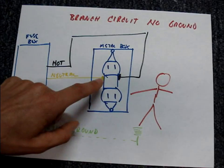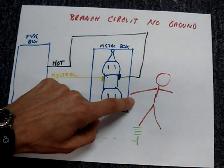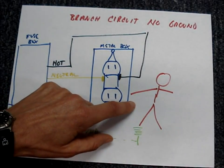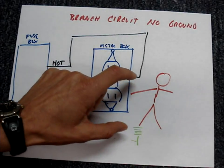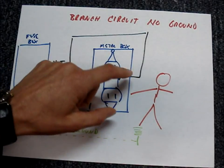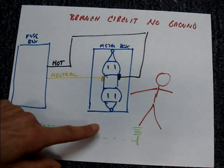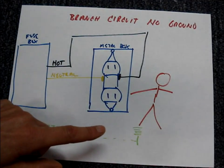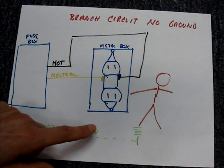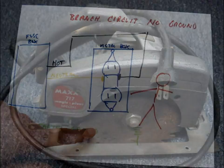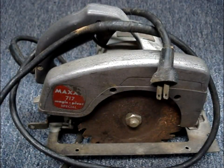The breaker won't trip because a person is just like a load. In other words, there's resistance, and if there's resistance on the circuit, a high current condition won't be created, and the breaker won't trip.